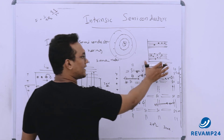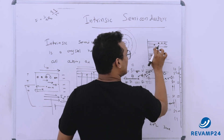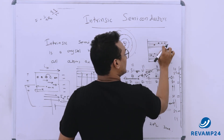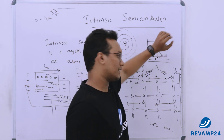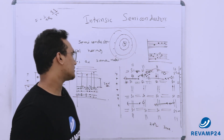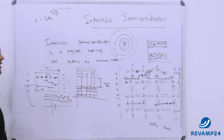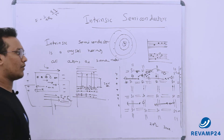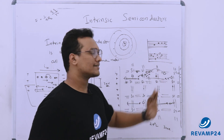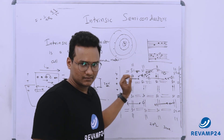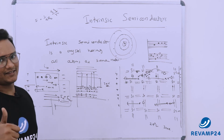At higher temperature we can see holes and electrons in the conduction band, and both contribute towards conduction. At lower temperature this is not possible because all the electrons are in the lattice — that is, in the bonded condition. Thank you.